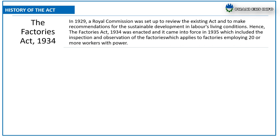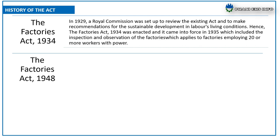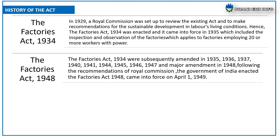Regarding the Factories Act 1934: in 1929, a royal commission was set up to review the existing act and to make recommendations for the sustainable development of laborers' living conditions. Hence, the Factories Act 1934 was enacted and came into force in 1935, which included the inspection and observation of factories, and applied to factories employing 20 or more workers with power.